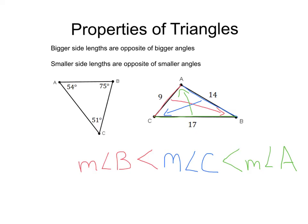We can order angles and sides from smallest to biggest, biggest to small, however we want. Just remember the relationship: the bigger sides are opposite the bigger angles, and the smaller sides are opposite the smaller angles.